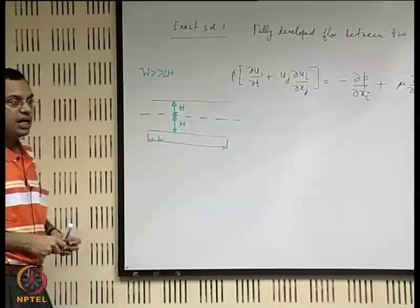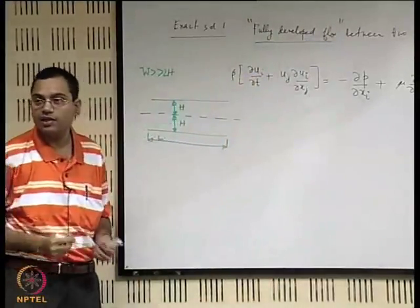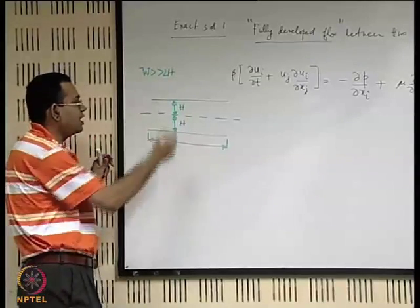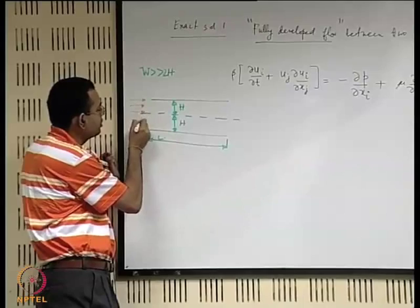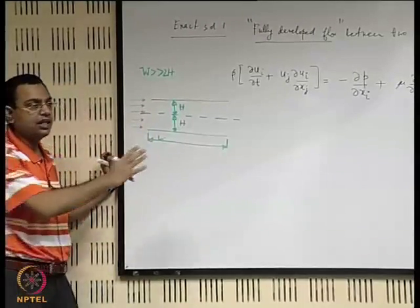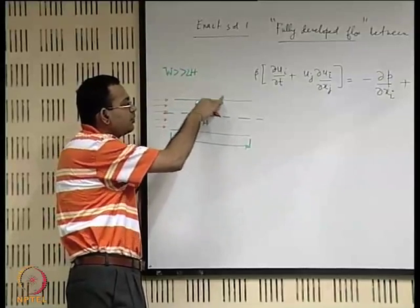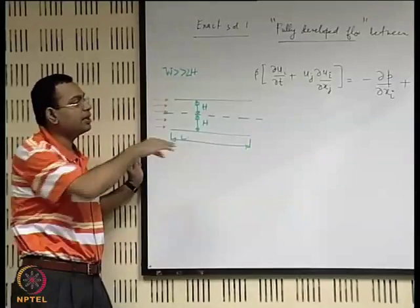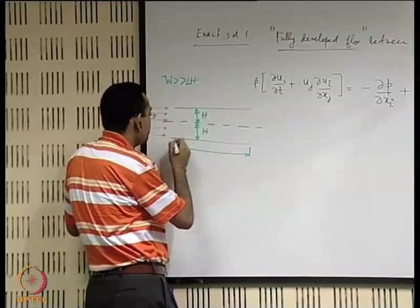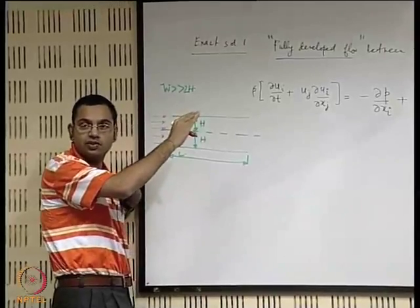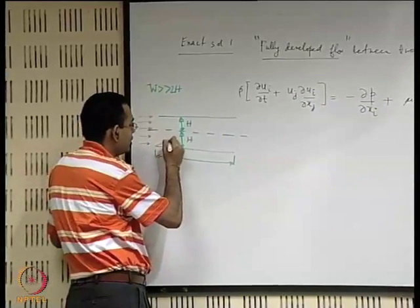Now let us understand physically what happens, because we have the keyword 'fully developed flow' which we have not yet explained. If you have a fluid flow entering the channel with a uniform velocity — a uniform free stream entering the channel — just consider first that you have one plate. Because of the effect of the plate, the boundary layer starts growing. So from the leading edge, the boundary layer starts growing like this.